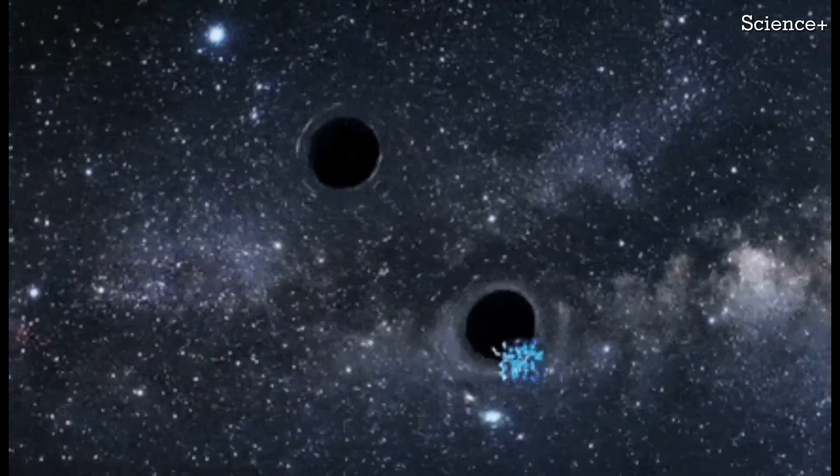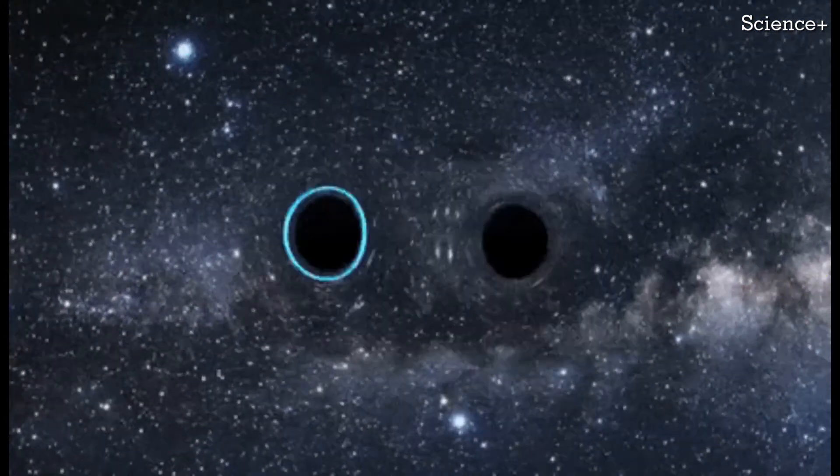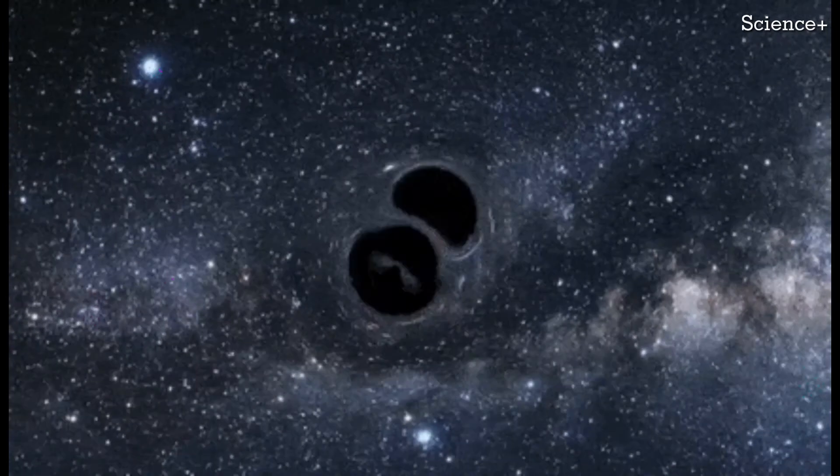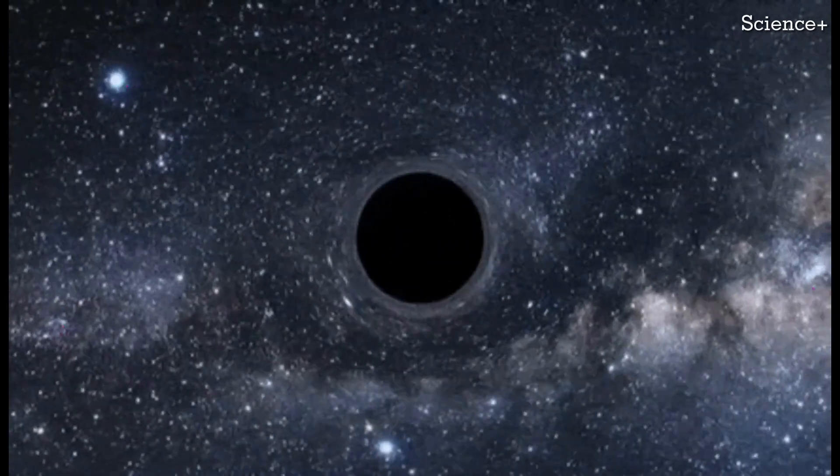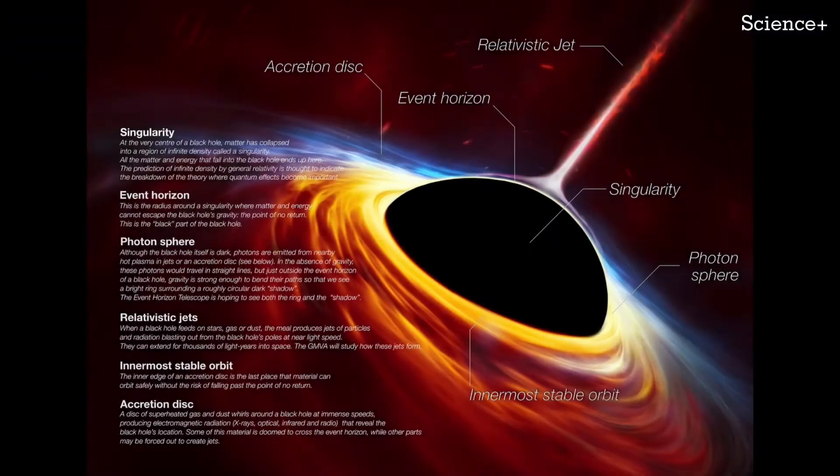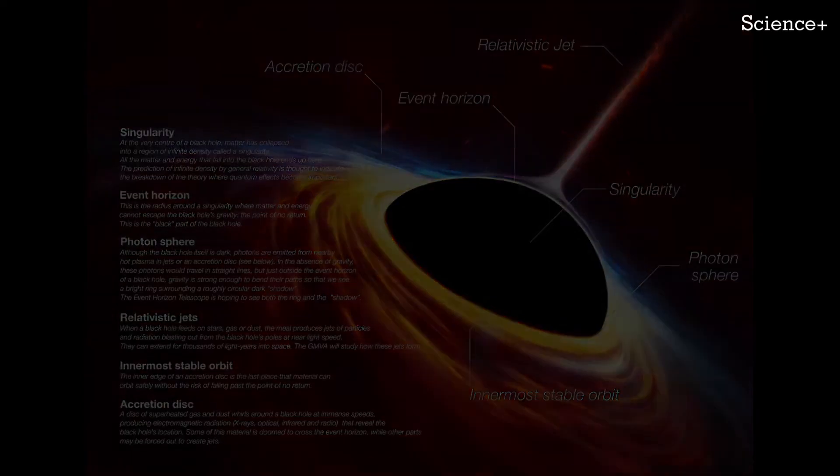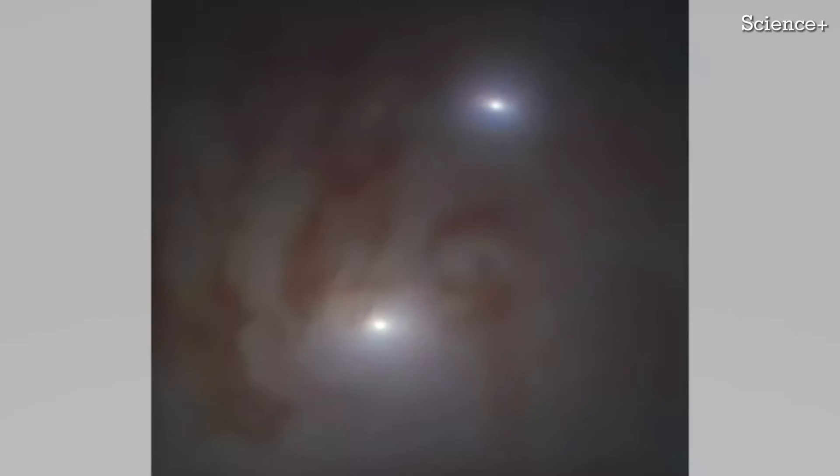Each once at the core of respective progenitor galaxies, the duo are the closest supermassive black hole pairing to Earth ever discovered. Eventually, in around 250 million years, these titanic cosmic monsters will also collide and merge like their parent galaxies, creating an even more massive supermassive black hole.